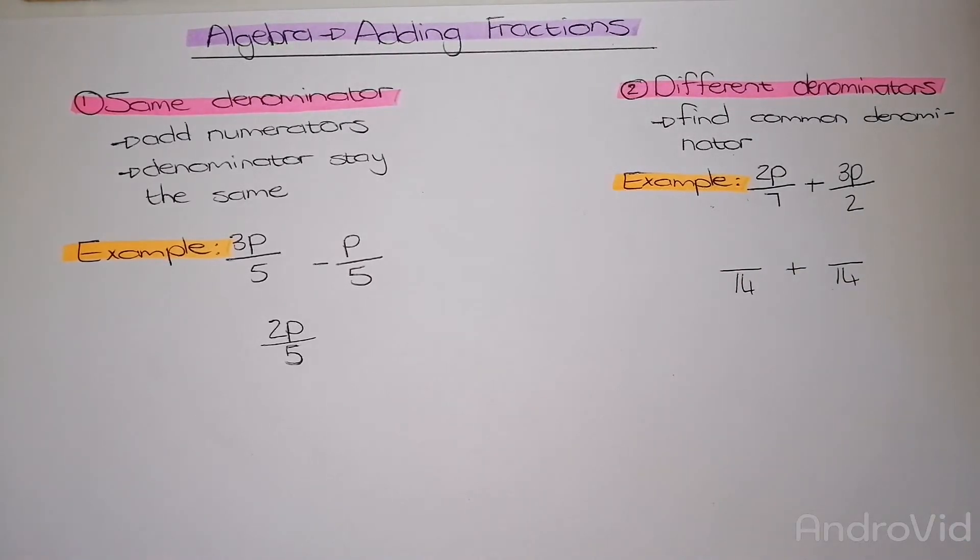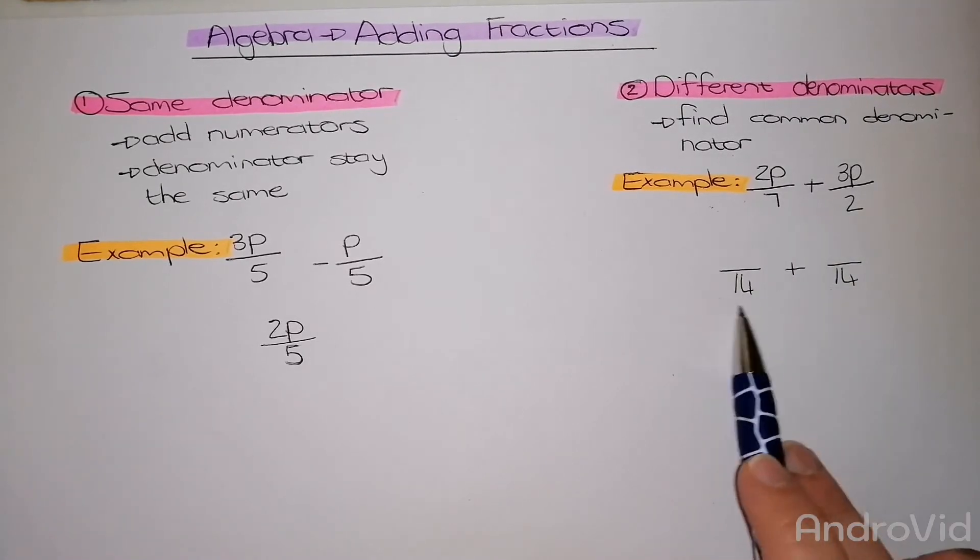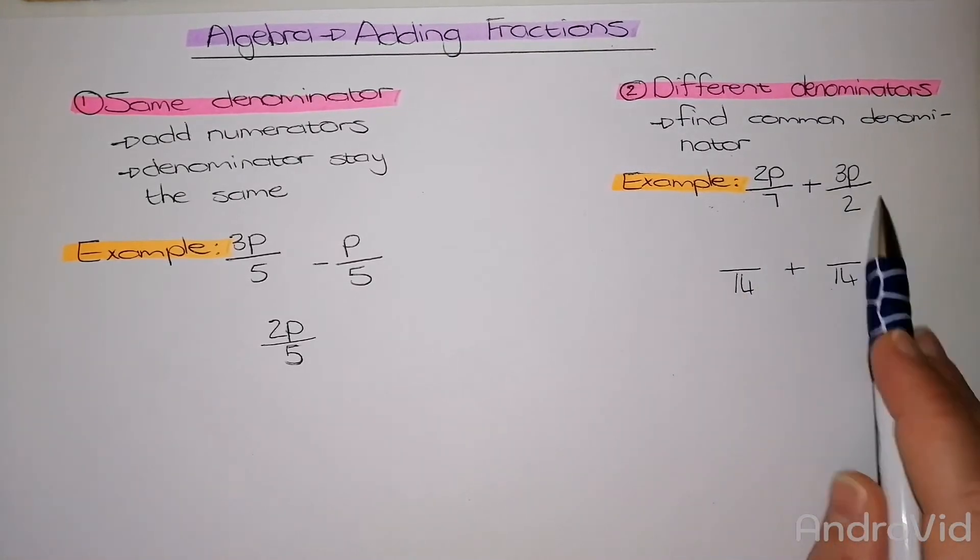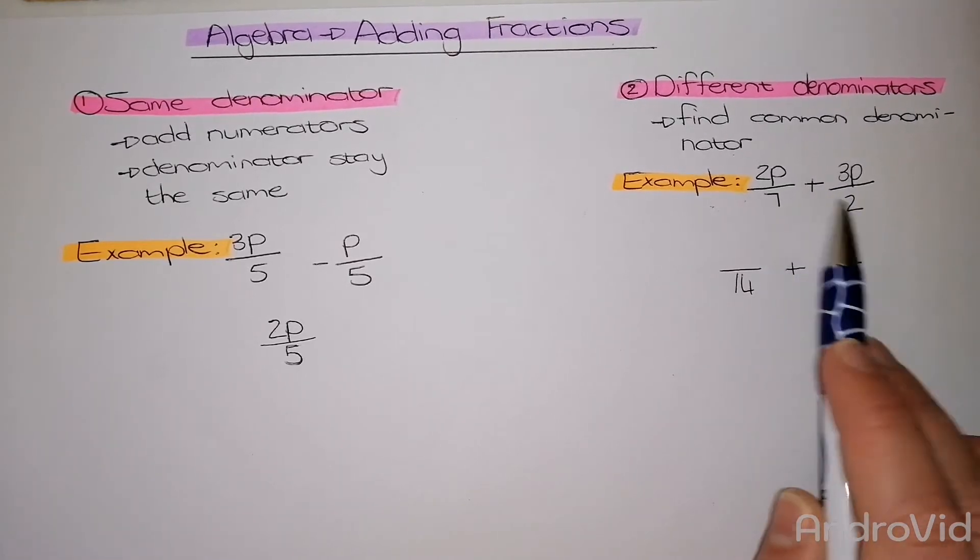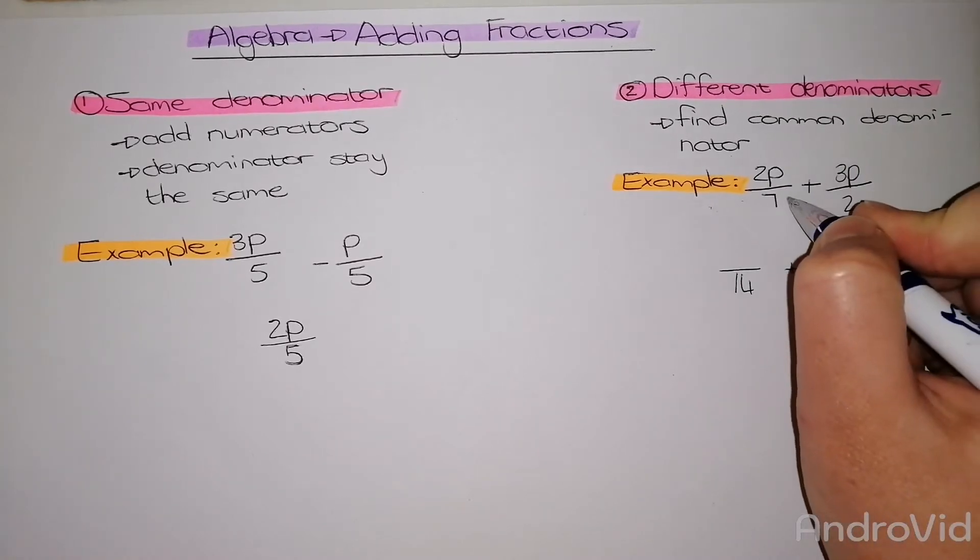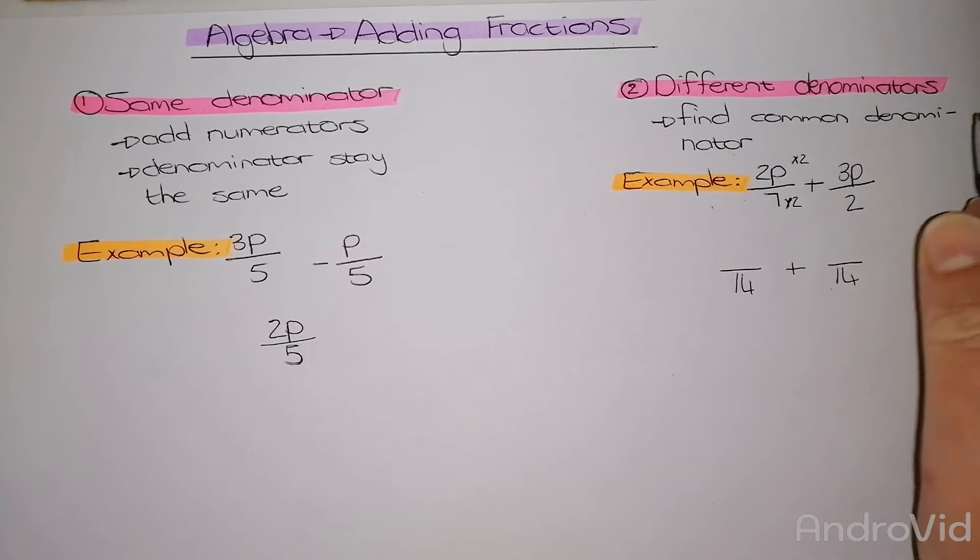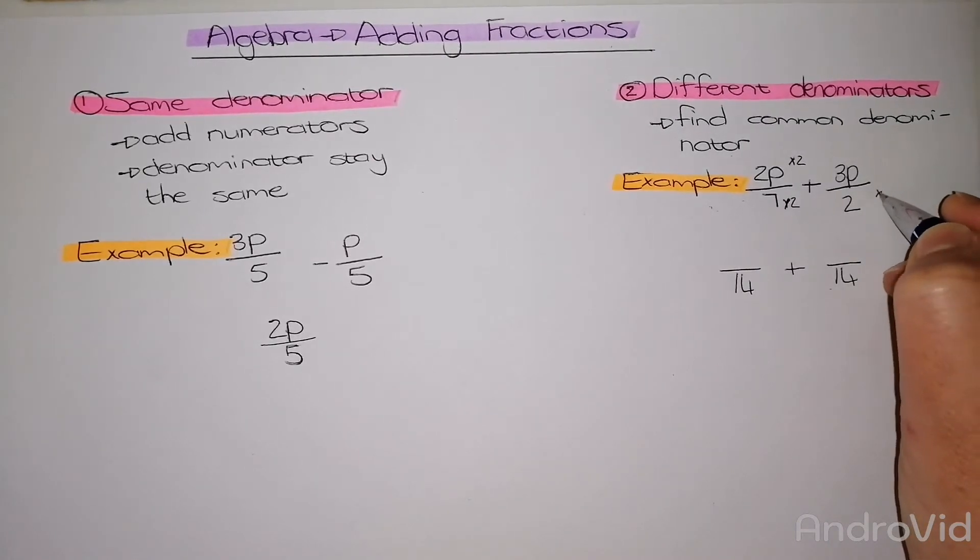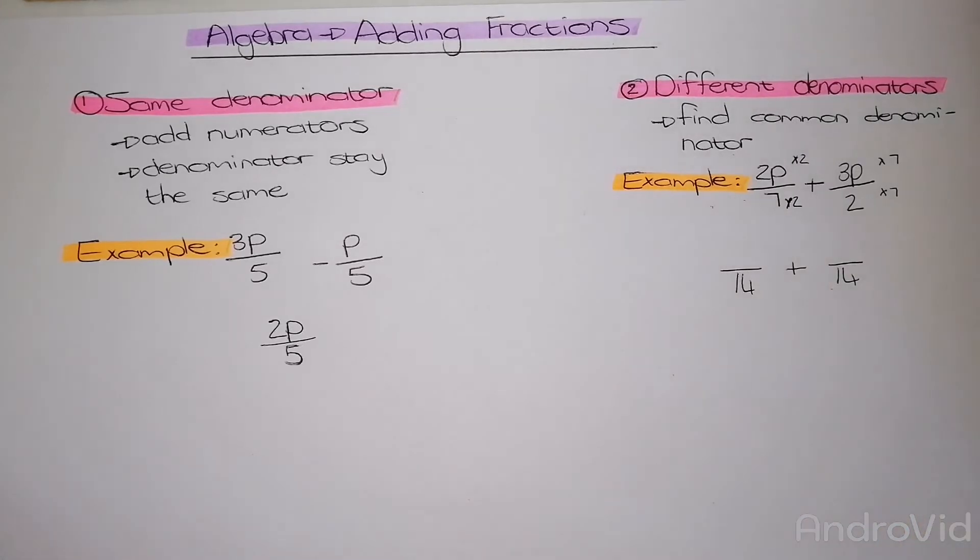So now I need to identify what I have done with my 7 to get to 14, and what I did with my 2 to get to 14. Both of these cases, we multiplied it with the other one. So I had to multiply 7 by 2, and what I do at the bottom, I need to do at the top. And the 2 I had to multiply by 7. What I do at the bottom, I need to do at the top. So let's continue.